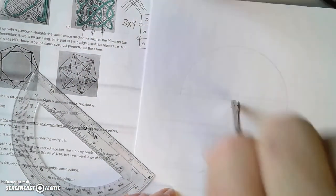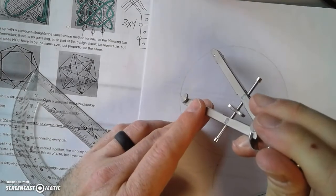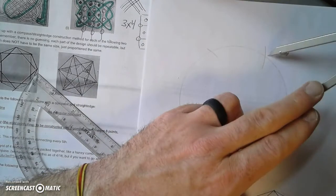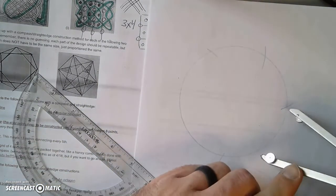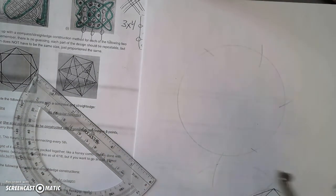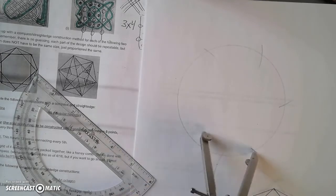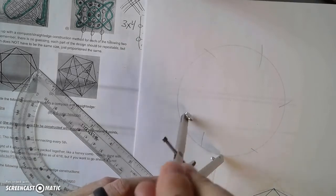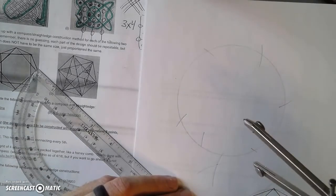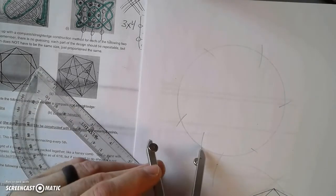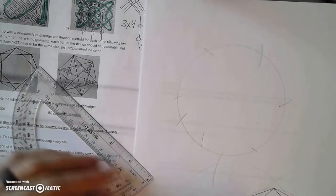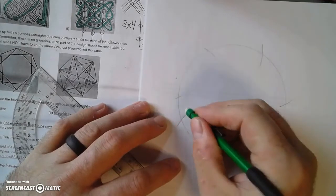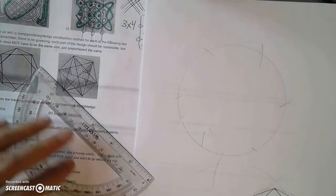So make a circle, and then I subdivide the circle into six pieces.